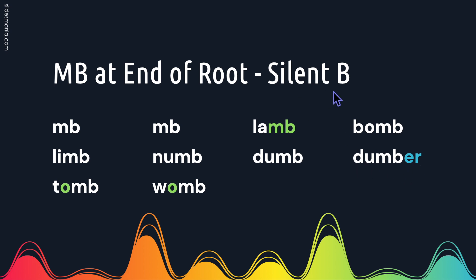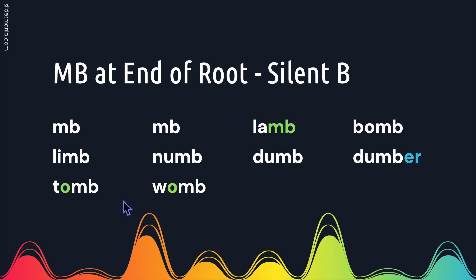So again, the B is silent when the M and B is at the end of a root. We can still add a suffix and have the B be silent. These two letter O's are both going to have the OO sound. So tomb and womb.